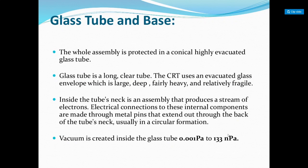The glass tube is a conical evacuated glass tube — it does not contain any air. It is highly evacuated; no air particles are present inside. It is a long, clear tube that uses glass that is large, heavy, and relatively fragile, so it must be handled very carefully. Inside the tube is what produces a stream of electrons, and electrical connections are made through the back in a circular form. The vacuum inside is about 0.001 to 133 pascal.